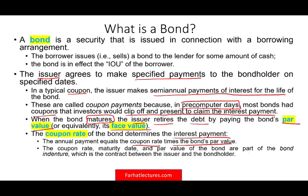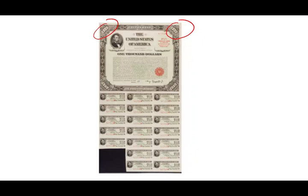The coupon rate, maturity date, and par value of the bond are part of the bond indenture, which is the contract. The term indenture means the contract between the issuer and the borrower. Here is a picture of a United States bond. The face value is $1,000. It's a coupon bond, and let's assume the interest rate is 6%. So we take the par value times the coupon rate — $1,000 times 6% equals $60.